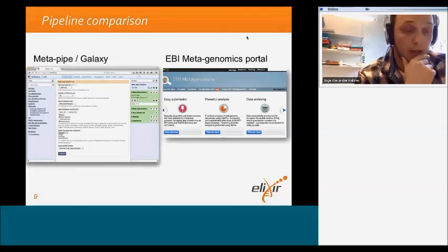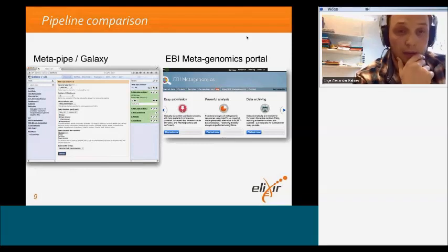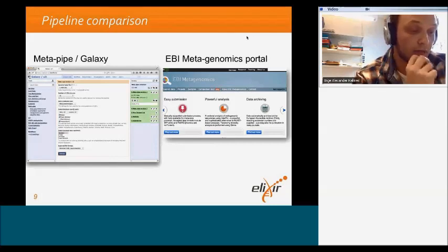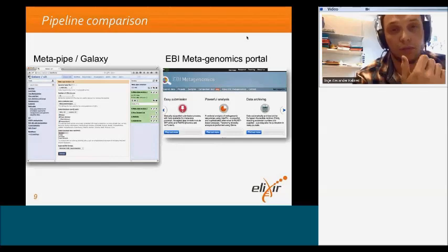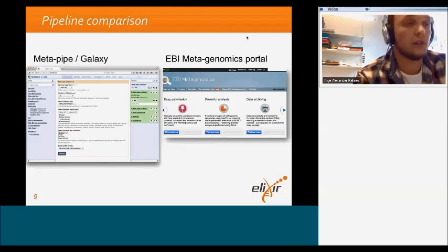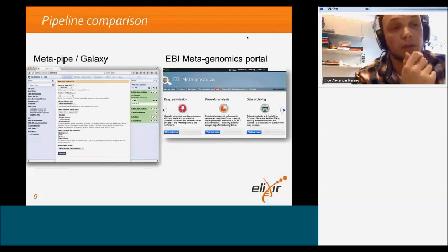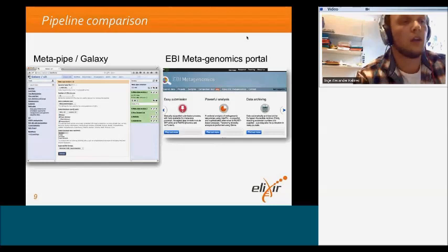This is how the two pipelines look on their respective websites. MetaPipe, on the left, which is the pipeline we use at Elixir Norway, is geared towards bioprospecting and the marine domain. On the right is the pipeline used by EBI Metagenomics Portal, which is a more generic pipeline. We have integrated MetaPipe with Galaxy, which is a web-based platform for bioinformatics analysis where you can access many different tools and chain them up in workflows. The EBI Metagenomics Portal is more of a standalone service where you can log in and upload samples via the European nucleotide archive.